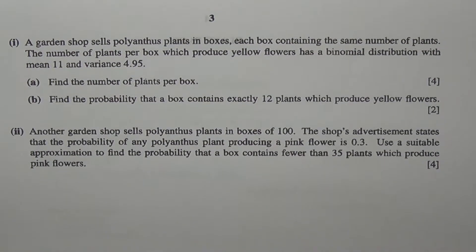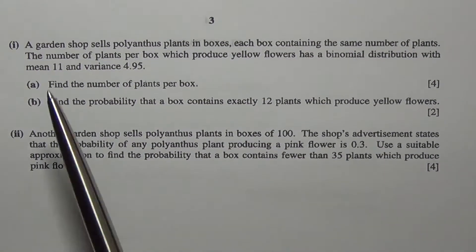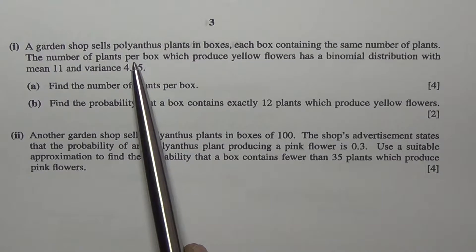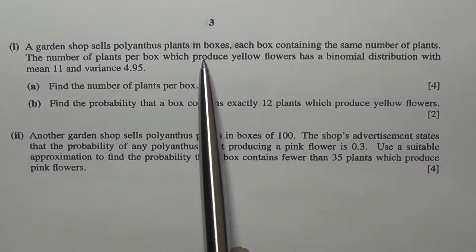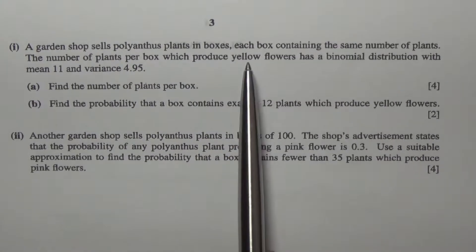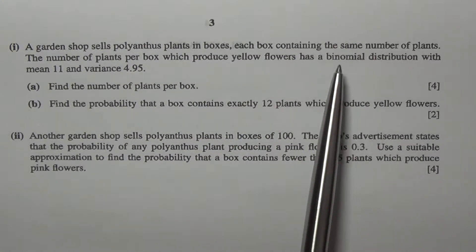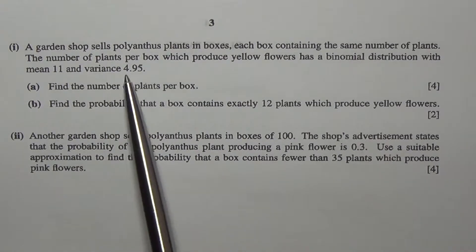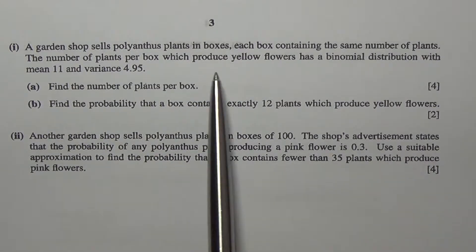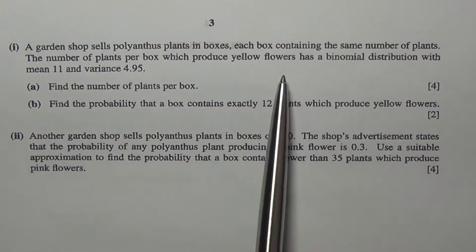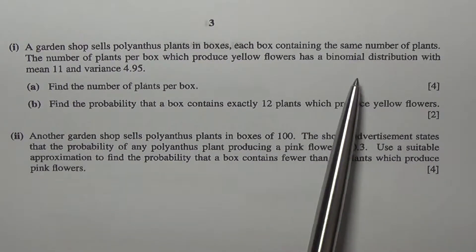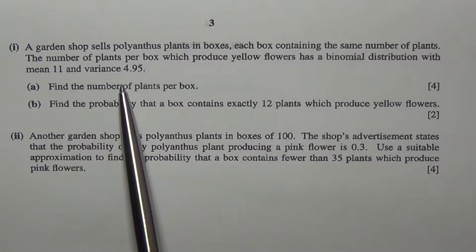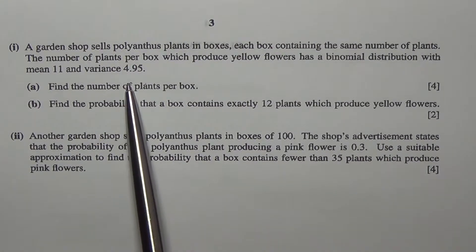Question number 7. A garden shop sells polyanthous plants in boxes, each box containing the same number of plants. The number of plants per box which produce yellow flowers has a binomial distribution with mean 11 and variance 4.95.